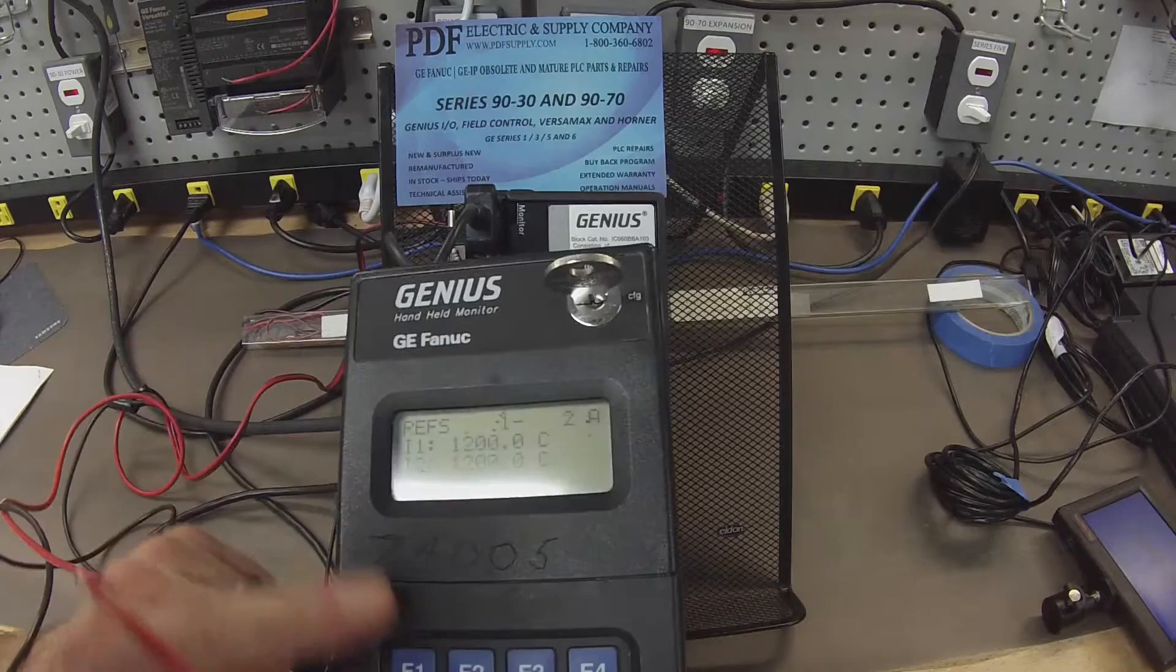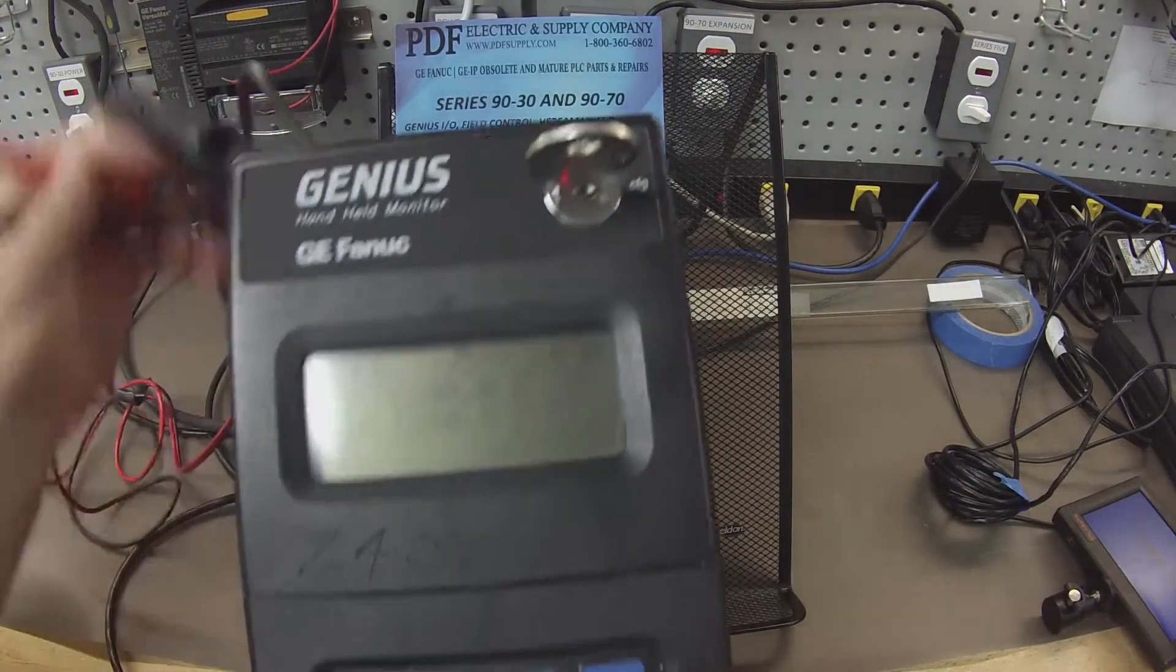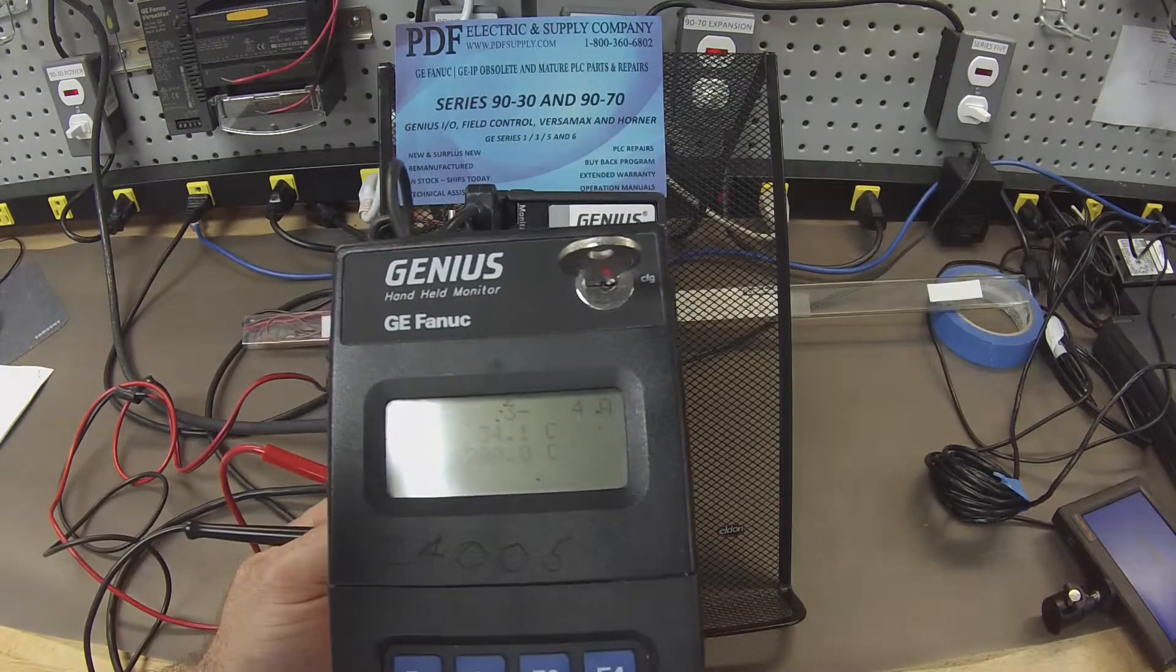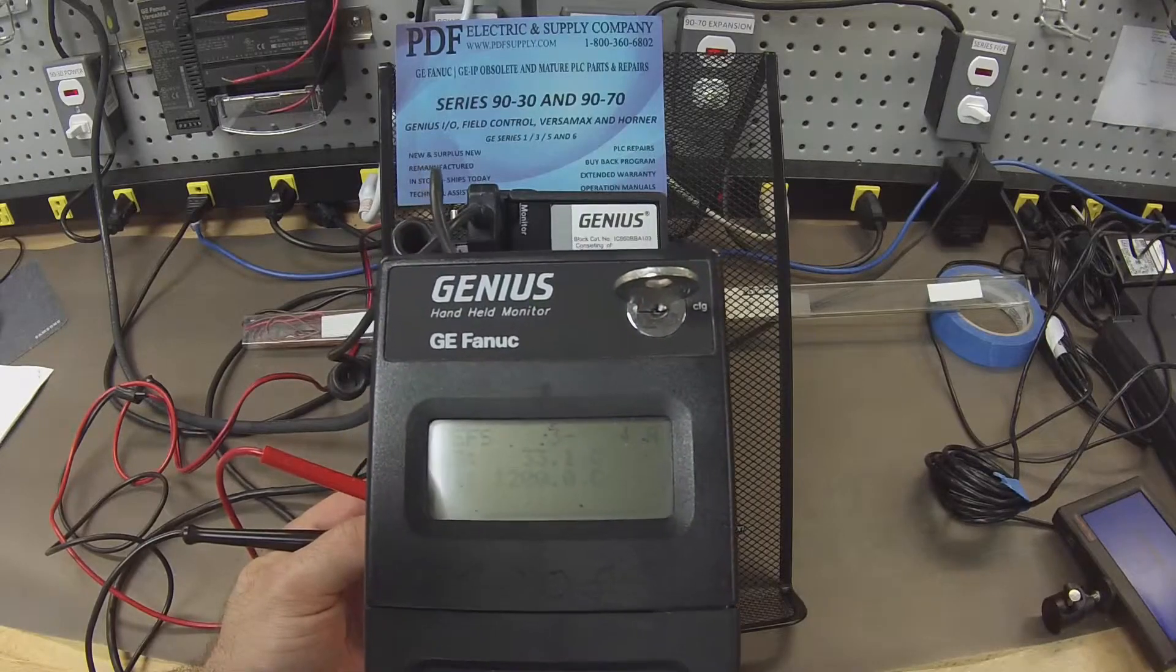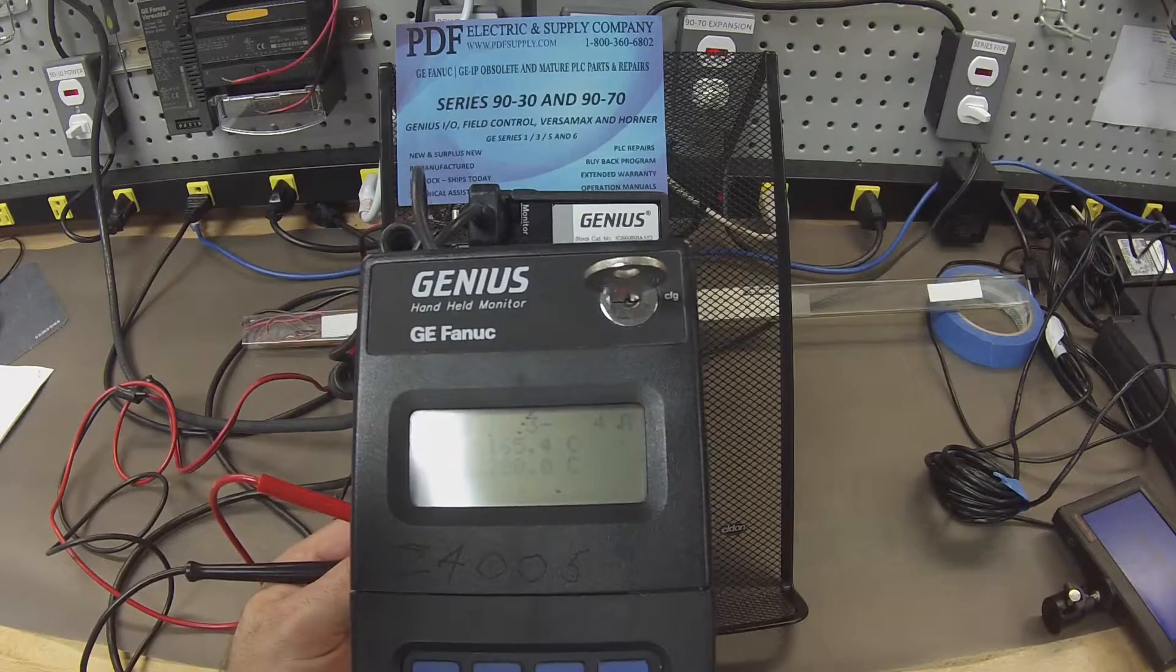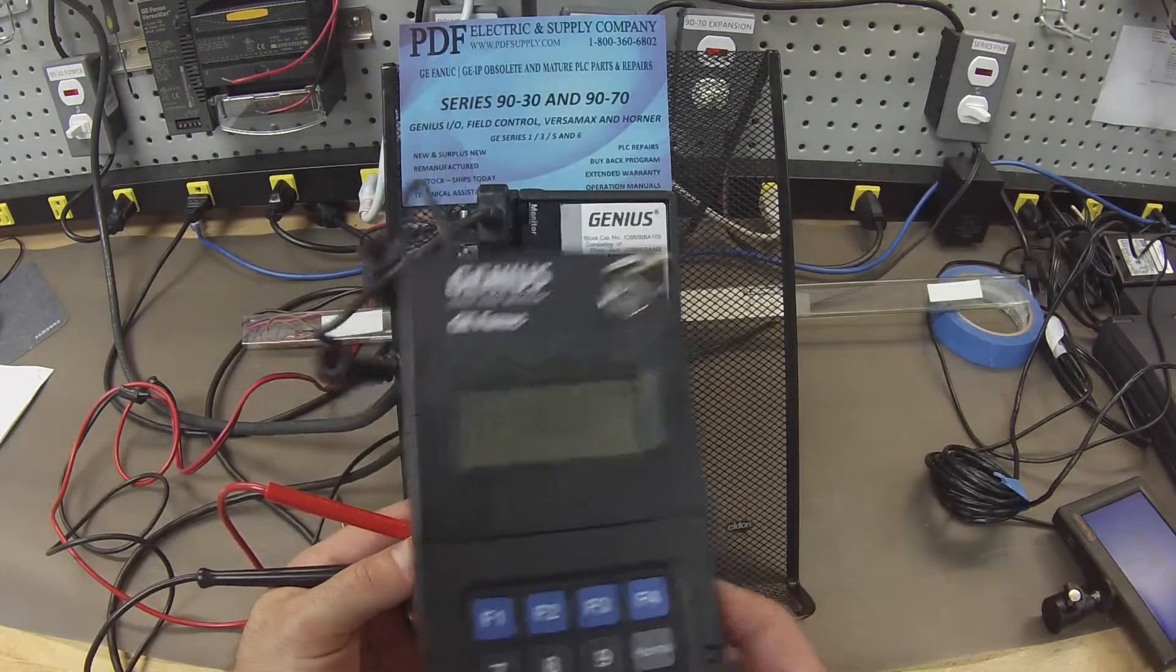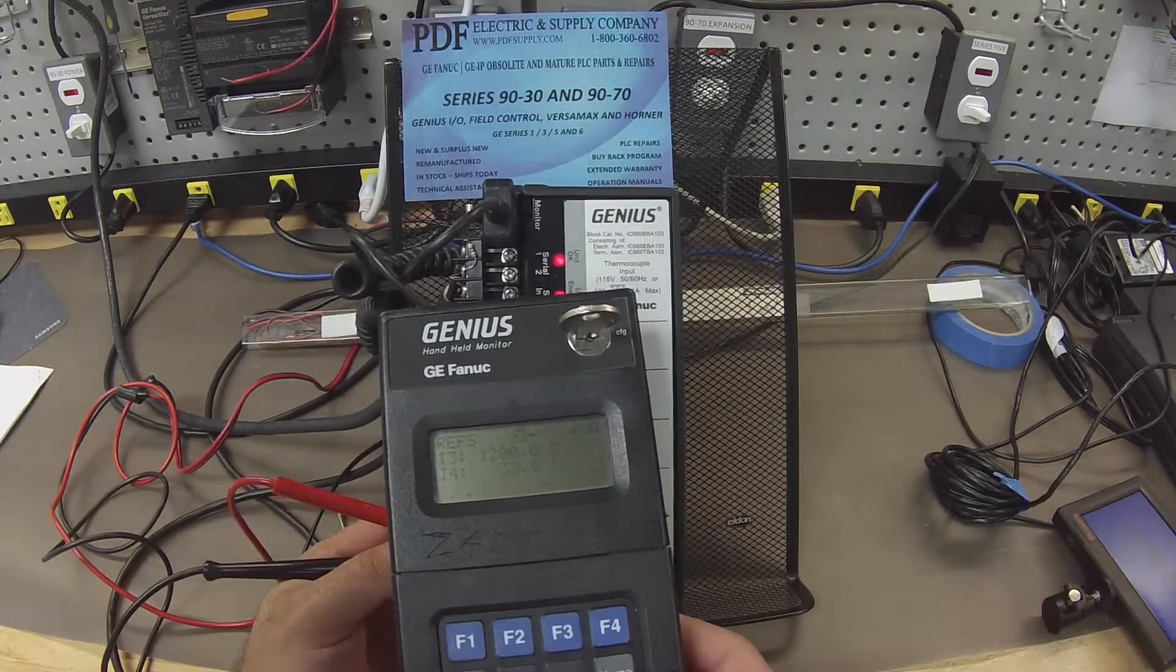Now I'm going to switch over to inputs 3 and 4. I'm touching terminals numbers 21 and 22 to get channel 3—again, very close to the same reading. Channel 4, 33.1, I'm touching terminals 23 and 24.